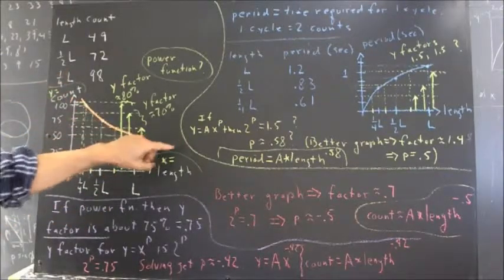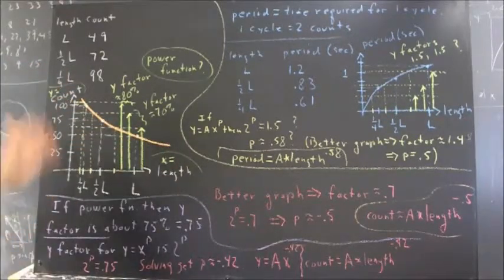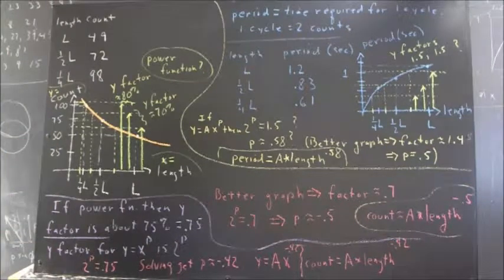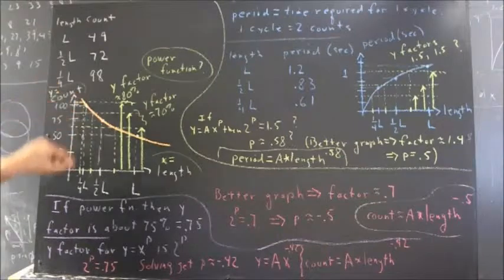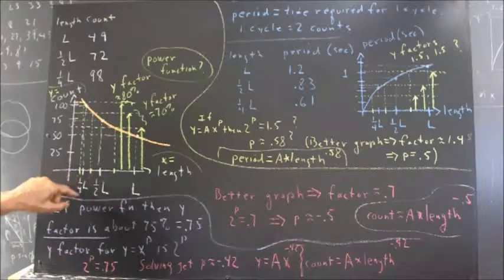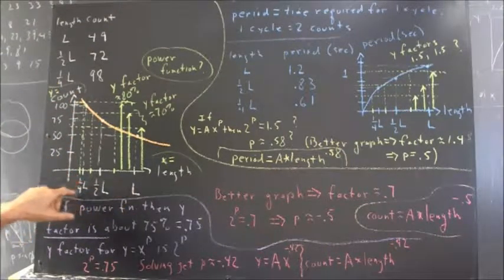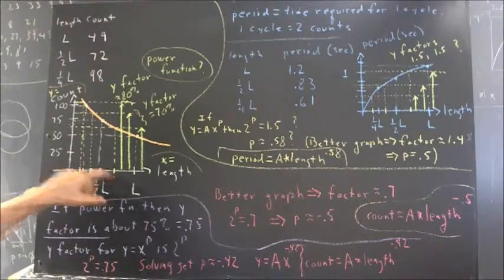Sketched a curve that we thought fit our data points pretty well. Remember, this is a hand sketched graph, and estimated the points on our graph that correspond to the three lengths, the original length, double that and double that, actually.